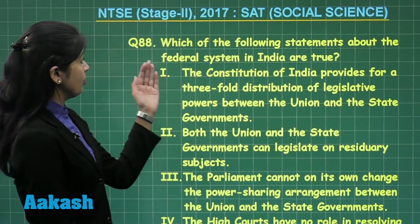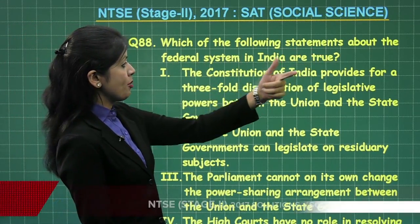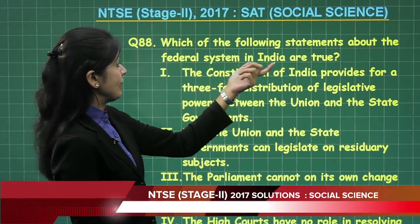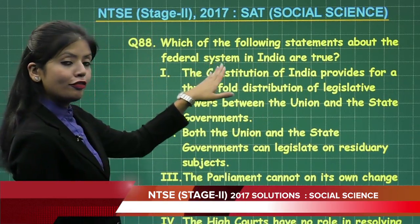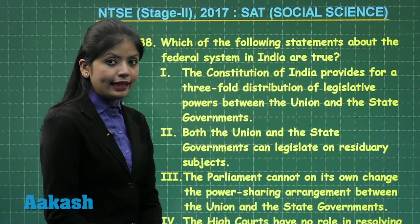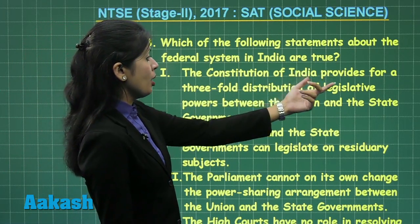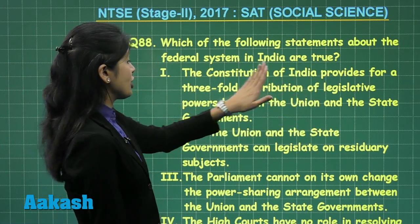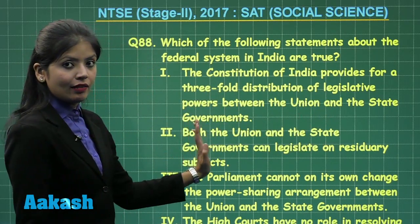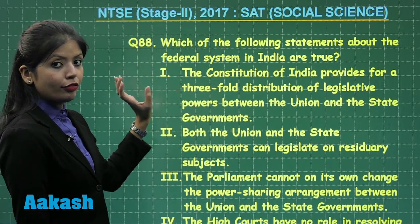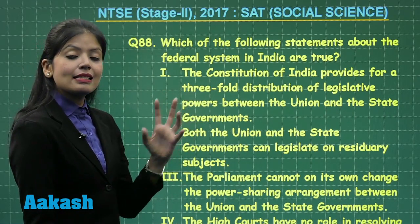Let us look at question number 88. The question states: which of the following statements about the federal system in India are true? I am looking for a correct statement with respect to the federal system followed in India. Statement one says the Constitution of India provides for a threefold distribution of legislative powers between the union and the state government — this is true, so statement one is a valid, correct statement.